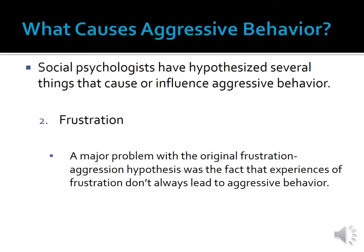The original frustration-aggression hypothesis, however, has not stood the test of time. Subsequent social psychological research found two major problems. The first major problem is that not all experiences of frustration lead to aggressive behavior, for a variety of reasons. For example, people may not act aggressively when frustrated due to the fear of being punished for acting aggressively. Also, social psychologists have found that people respond to frustration in a variety of ways — some people get depressed, some get anxious, and some people react by doing nothing at all and just going about their daily lives.